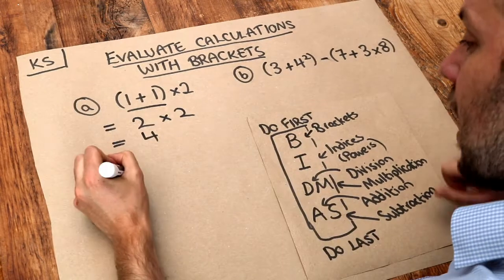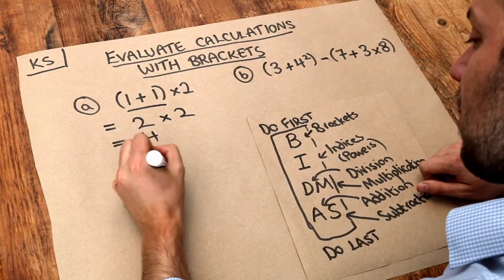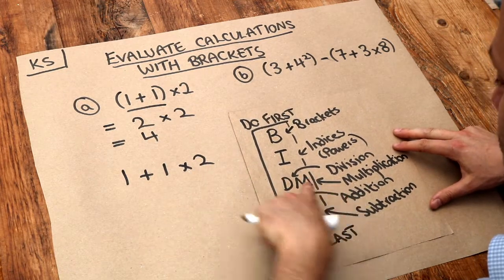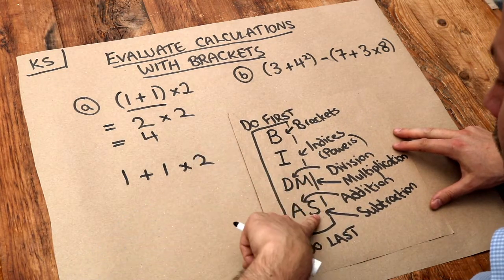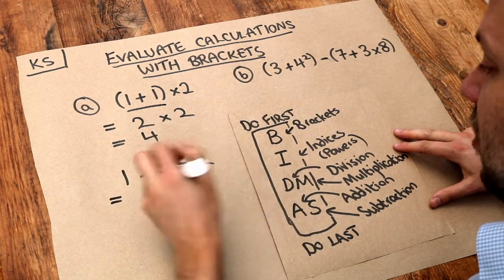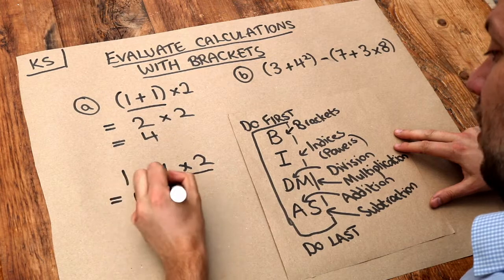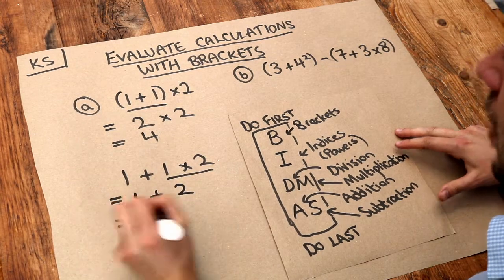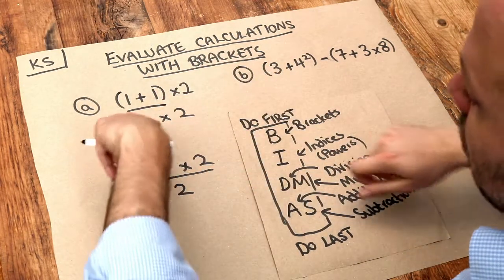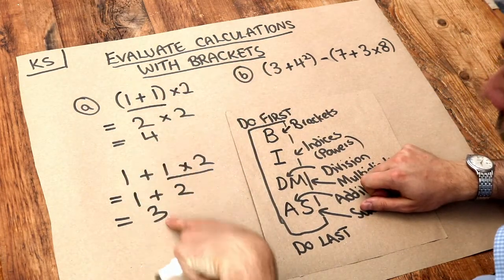And notice, by the way, that if you didn't have those brackets, so we had 1 plus 1 times 2, then we've got an addition and a multiplication. Now multiplication comes above addition, so we've got to do the multiplication first. So we would do the 1 times 2 first, which is 1 plus 2, and then 1 plus 2 is 3. So you can see the brackets around the 1 plus 1 here changes the result of the calculation.